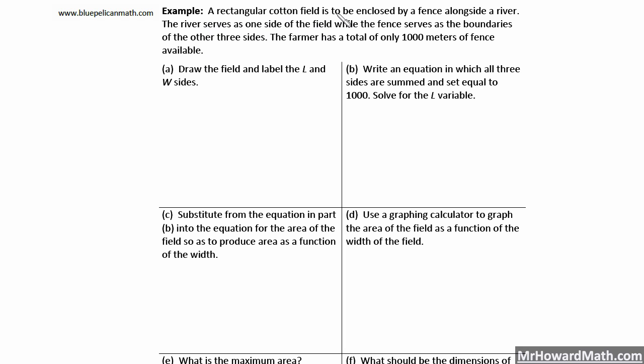Example: A rectangular cotton field is to be enclosed by a fence alongside a river. The river serves as one side of the field, while the fence serves as the boundaries of the other three sides. The farmer has a total of only a thousand meters of fence available. Let's think about this.